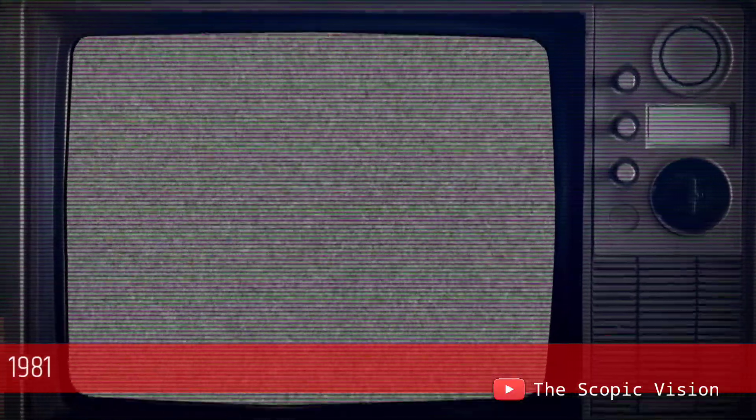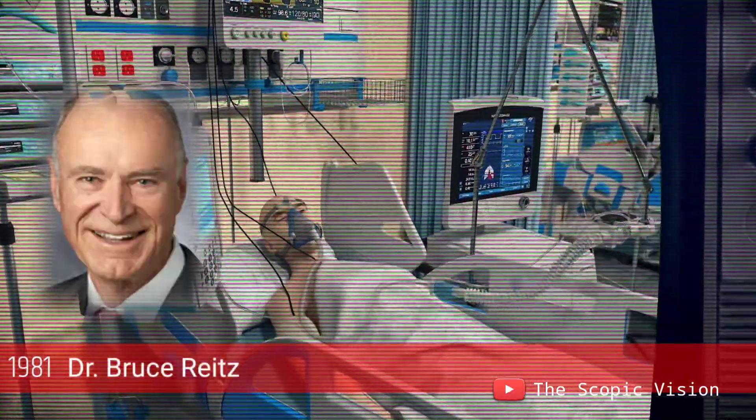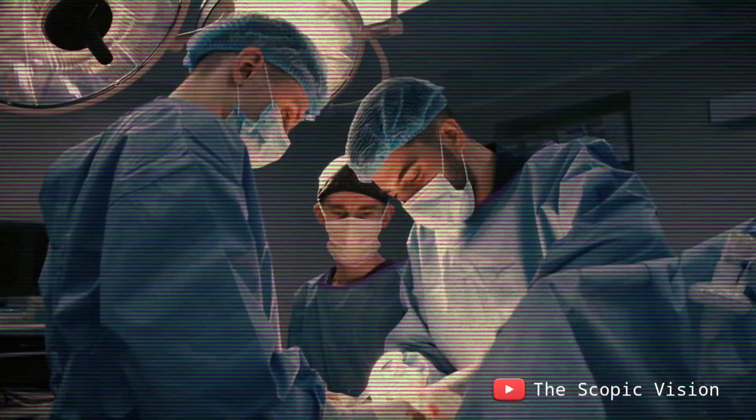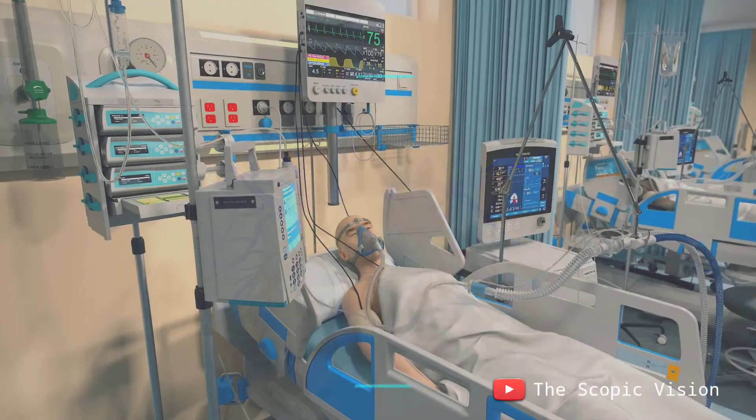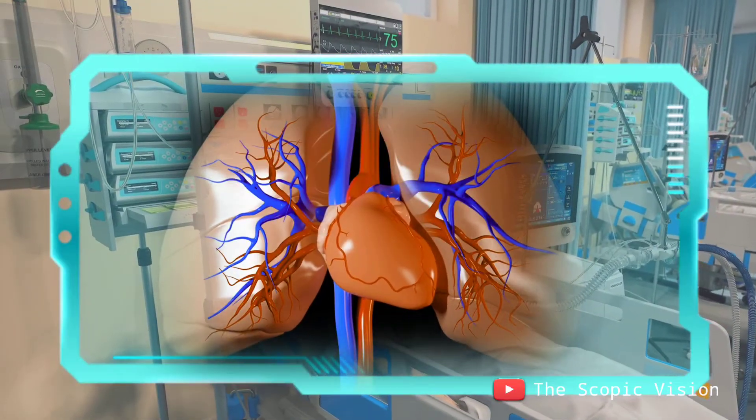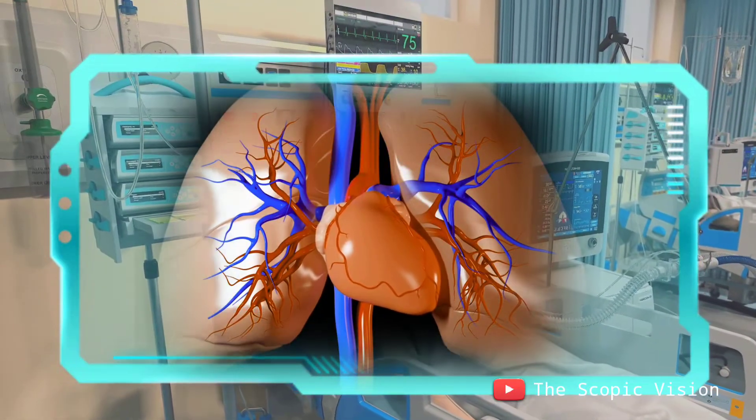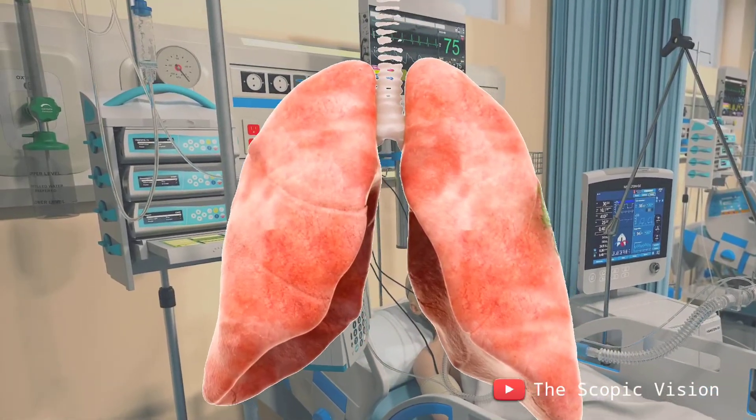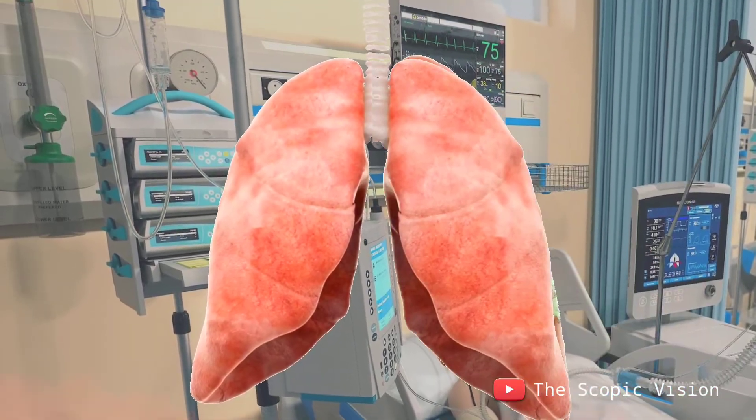In 1981, Dr. Bruce Reitz used a heart transplant technique to perform a lung transplant, which was successful for the first time in history. A heart-lung transplant involves transplanting both the heart and lungs, while a lung transplant specifically refers to replacing a diseased lung with a healthy lung from a living or deceased donor.